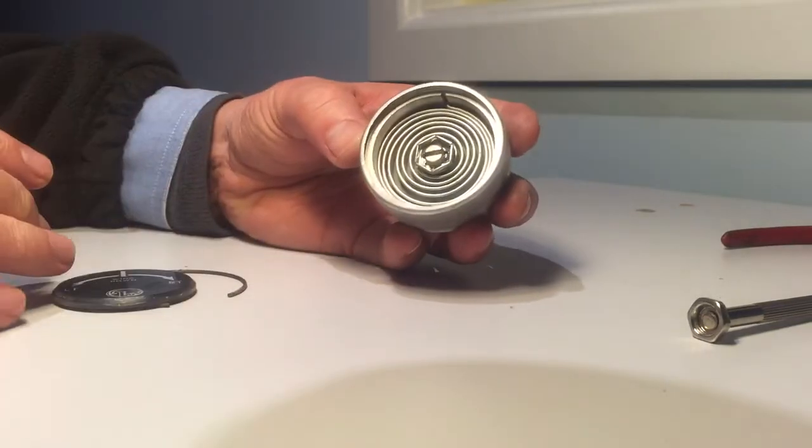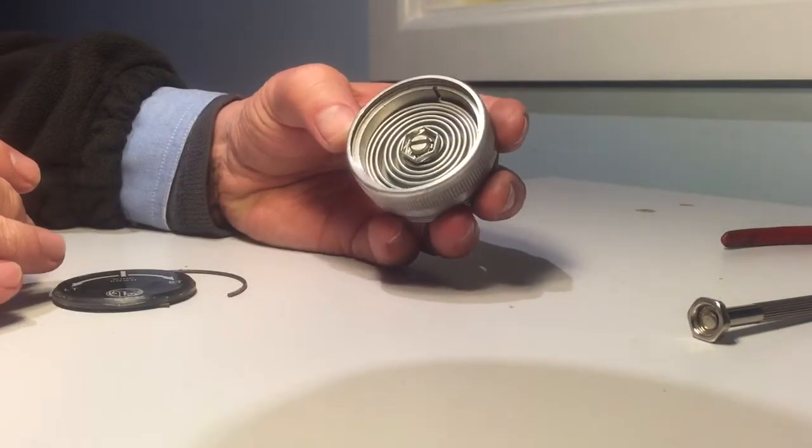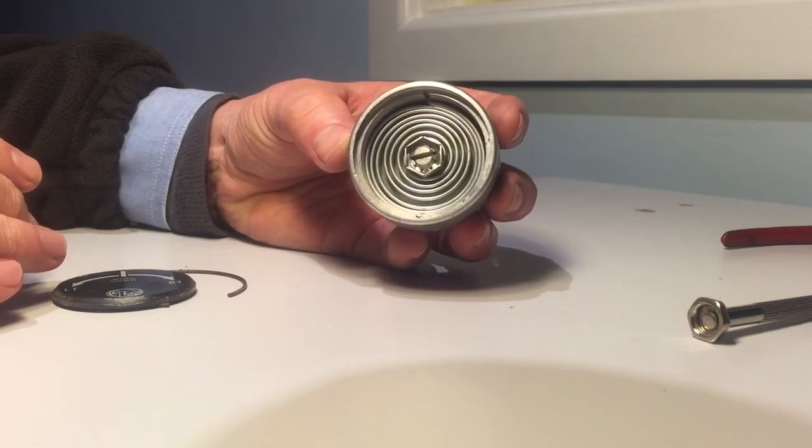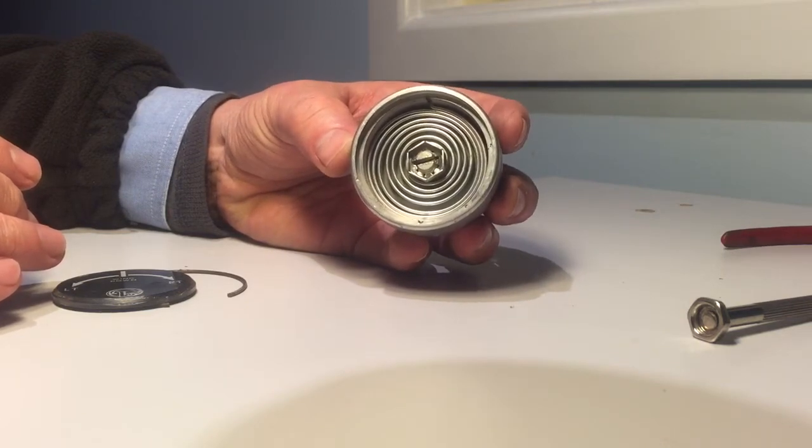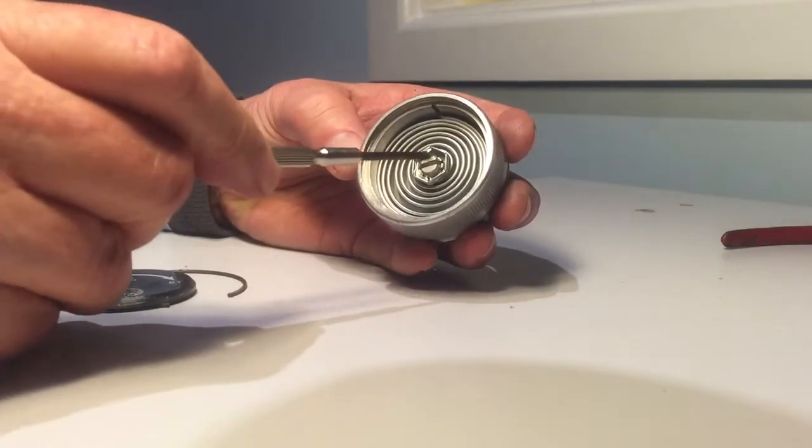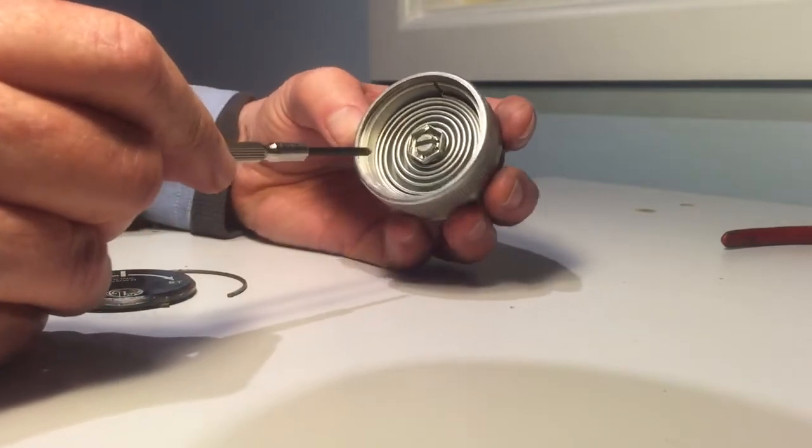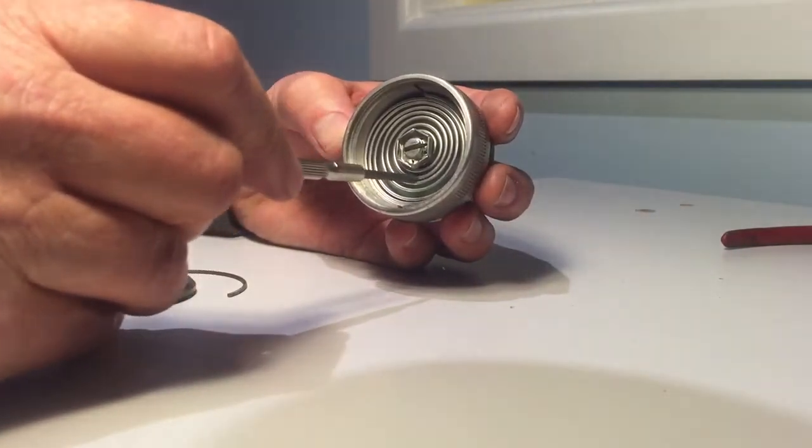Inside you can see the genius of the Beech trim mechanism. What it is is this spring, and there should be two springs in fact, but there's a plate between the two of them.